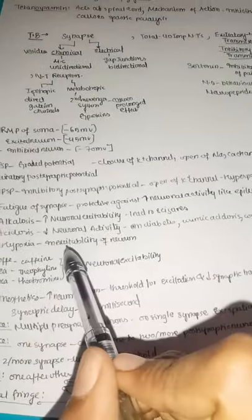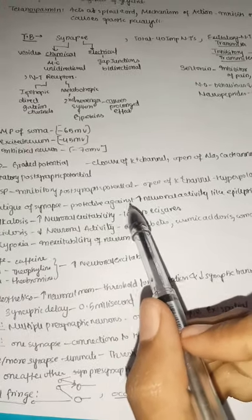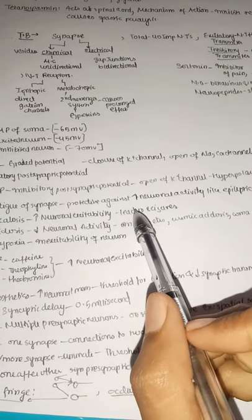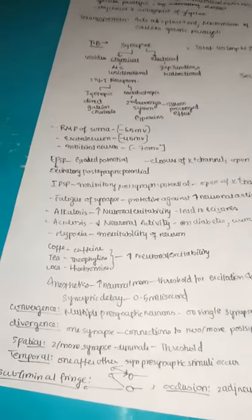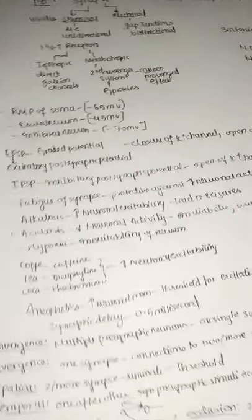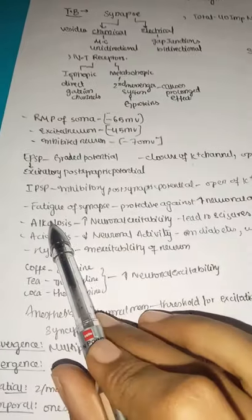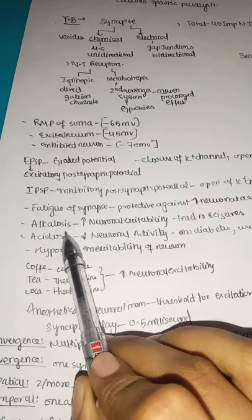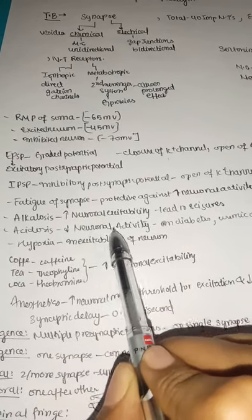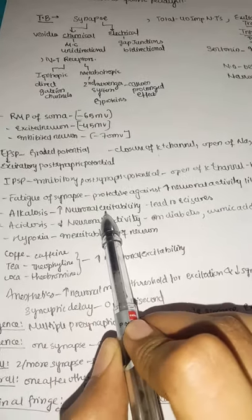Synaptic fatigue occurs when a synapse stops firing after some time — this is protective because excessive synapse activity leads to higher neuronal excitability and may cause epileptic seizures, which are continuous abnormal neuronal contractions. In alkalosis (high pH), neuronal excitability increases and may lead to seizures.